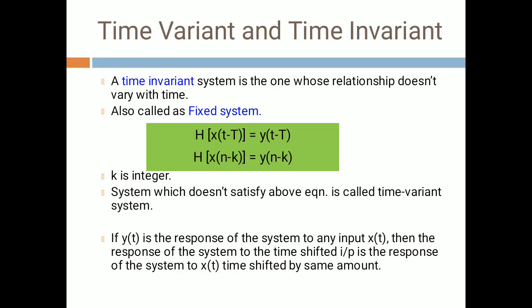Today we will see the topic: time variant and time invariant systems. As the name suggests, a time invariant system is one whose relationship does not vary with time, also called a fixed system. The equation for a time invariant system is: H{x(t-T)} = y(t-T) for continuous signals, and H{x(n-k)} = y(n-k) for discrete signals, where k is an integer. A system which does not satisfy this equation is called a time variant system.